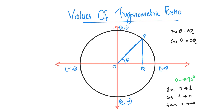Hi friends! In this video, we have a unit circle. That's the value of sin theta, cos theta. We have a unit circle in a Cartesian plane or two-dimensional plane. We have compared sin theta and cos theta. Let's go and redo this video.